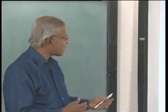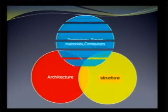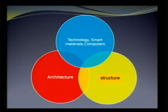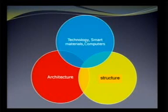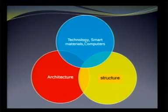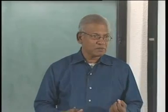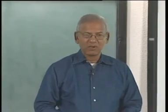So first is architecture, next is structure. For thousands of years we had only architecture and structure working together to produce marvelous structures like pyramids, temples and all the glorious structures all over the world. But today, technology in its varied sense — things like smart materials and computers — have come in, which gives a new dimension to what is possible with structure and architecture.